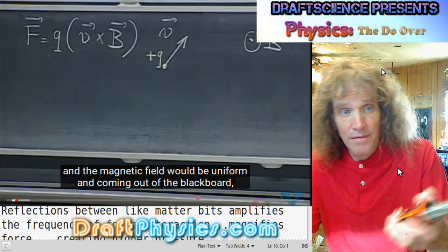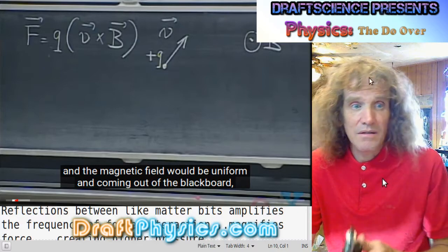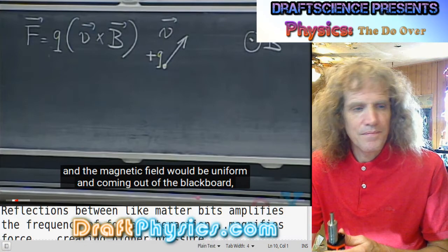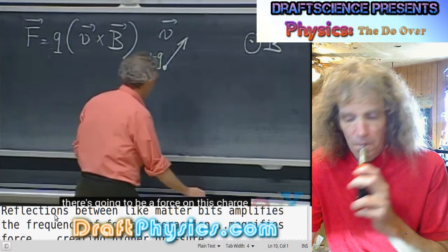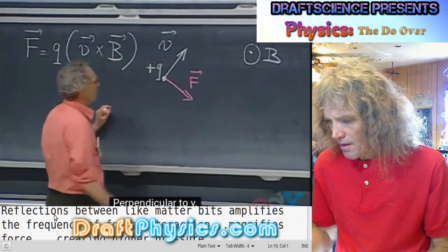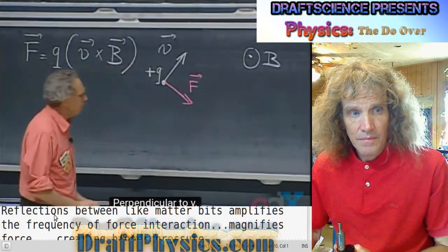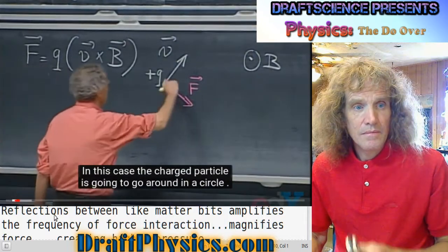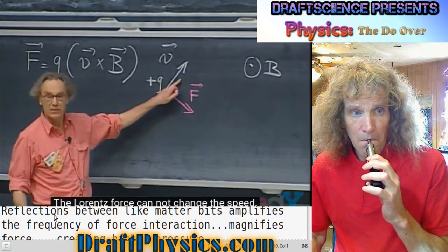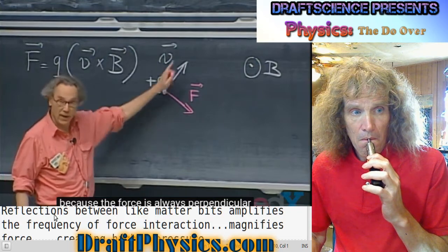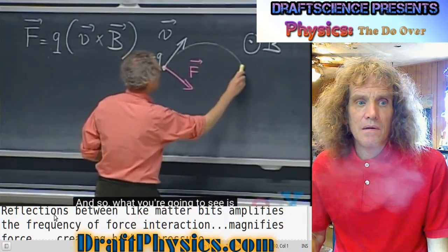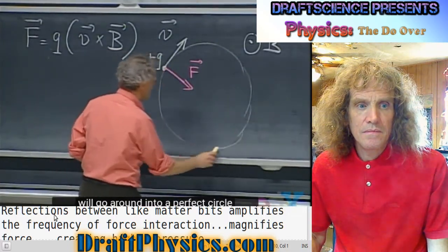Clearly a magnetic field is north and south, it has components. I don't know exactly why he just says B — it just doesn't say enough. There's going to be a force on this charge according to this relationship. The force is perpendicular to V, perpendicular to B. In this case, the charged particle is going to go around in a circle. The Lorentz force cannot change the speed, cannot change the kinetic energy, because the force is always perpendicular to the velocity, but it can change the direction.